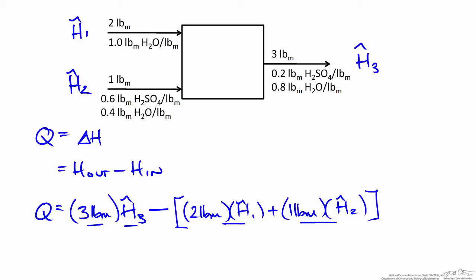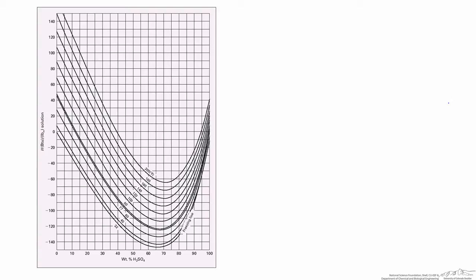To find the specific enthalpy of each stream, we use the enthalpy-concentration diagram, since we know both the concentration and temperature of each stream. The diagram shows specific enthalpy in BTUs per pound of solution as a function of the mass fraction of H₂SO₄, across isotherms ranging from 32 to 200 degrees Fahrenheit. The first stream is pure water, so the mass fraction of H₂SO₄ is zero at 100°F. Tracing the 100-degree isotherm to x = 0 gives a specific enthalpy slightly less than 70 BTU/lb; we'll use 68.